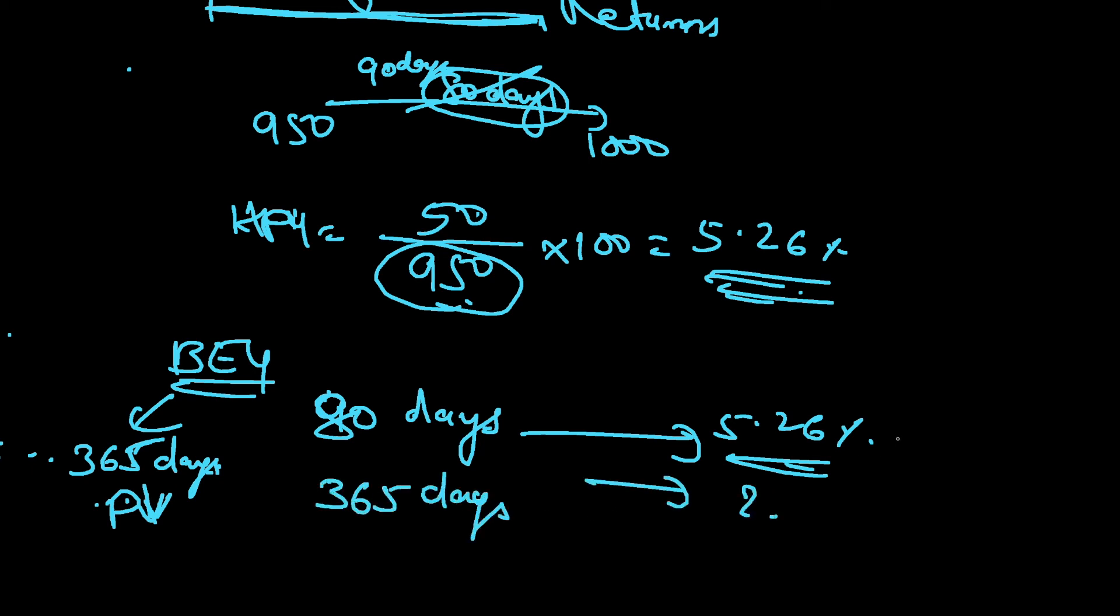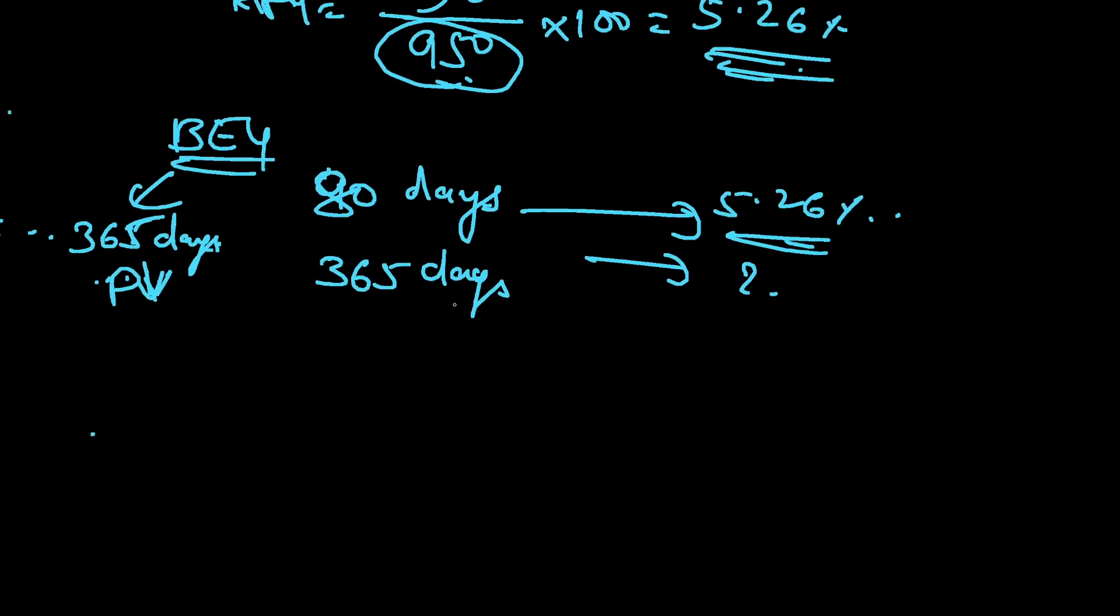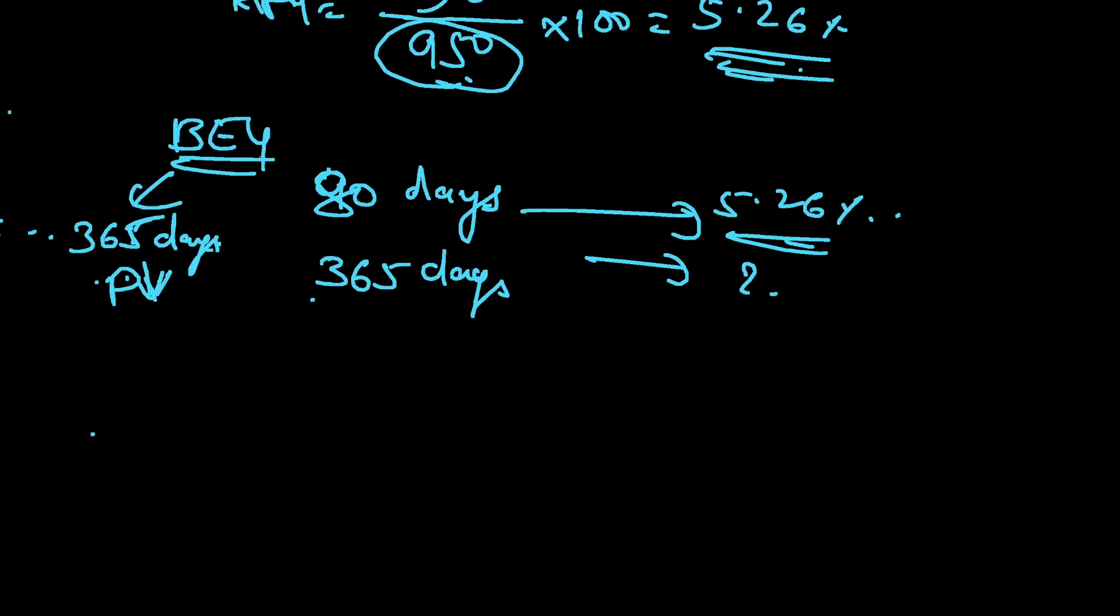Now here we will not be focusing on compounding - compounding is not connected with bond equivalent yield. We will go by simple cross multiplication method. That's what bond equivalent yield is all about. So you just have to do cross multiplication: 365 into 5.26% divided by 80 days. That comes to 23.99%.